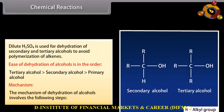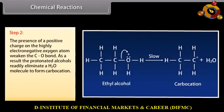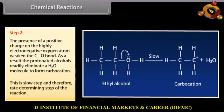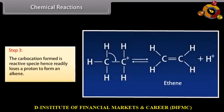Mechanism of dehydration of alcohols: Step 1 — protonation of alcohol. Due to the presence of lone pair of electrons on oxygen, alcohols act as weak bases and accept a proton from acids to form oxonium salts. Step 2 — the positive charge on the highly electronegative oxygen atom weakens the C-O bond; the protonated alcohol readily eliminates a water molecule to form a carbocation. This is the slow, rate-determining step. Step 3 — the carbocation readily loses a proton to form an alkene.